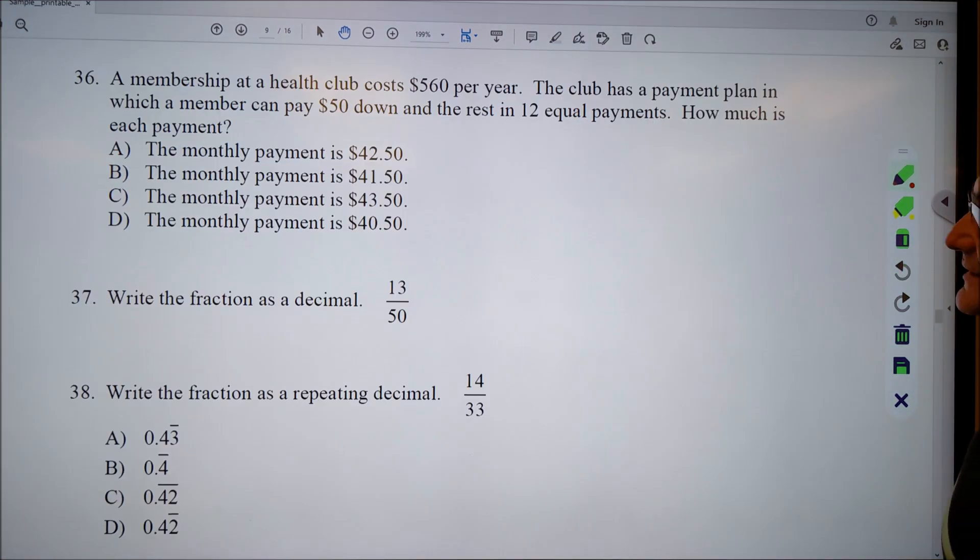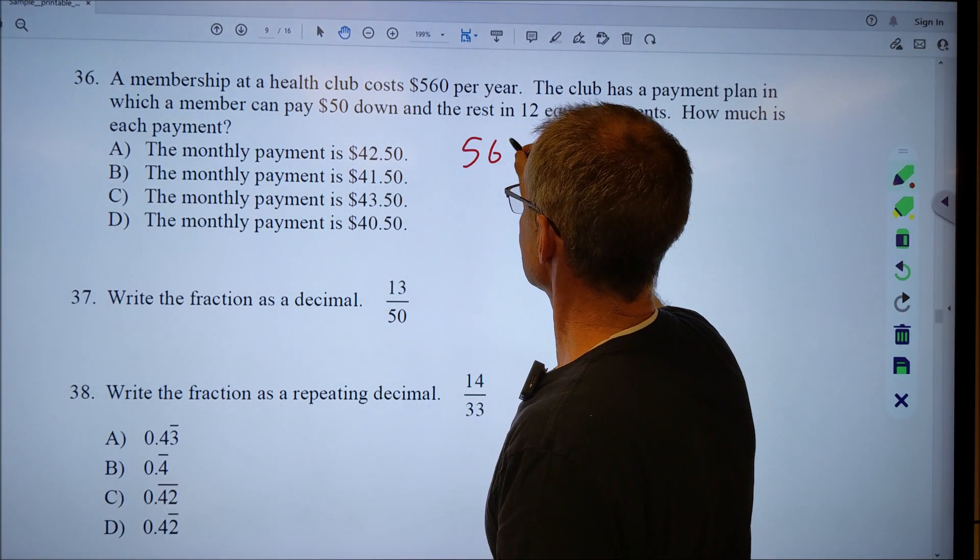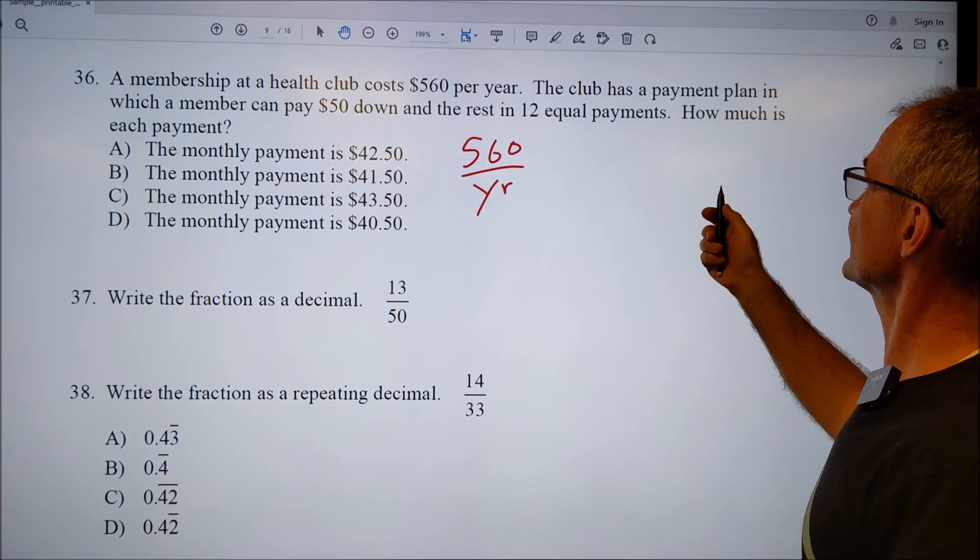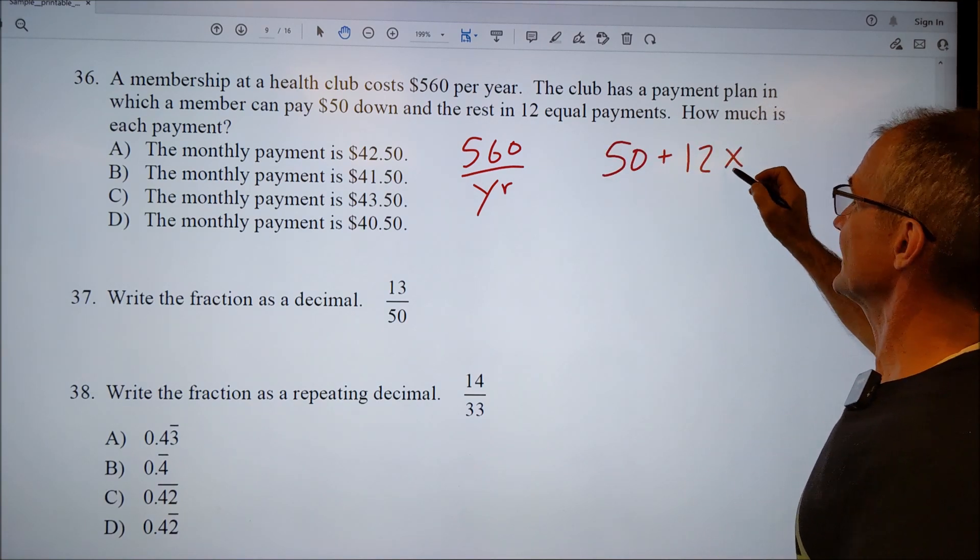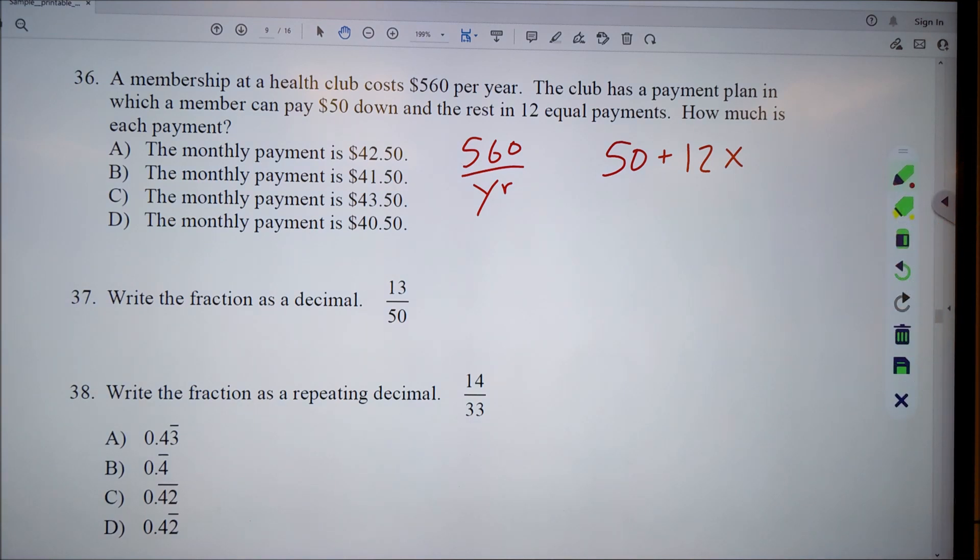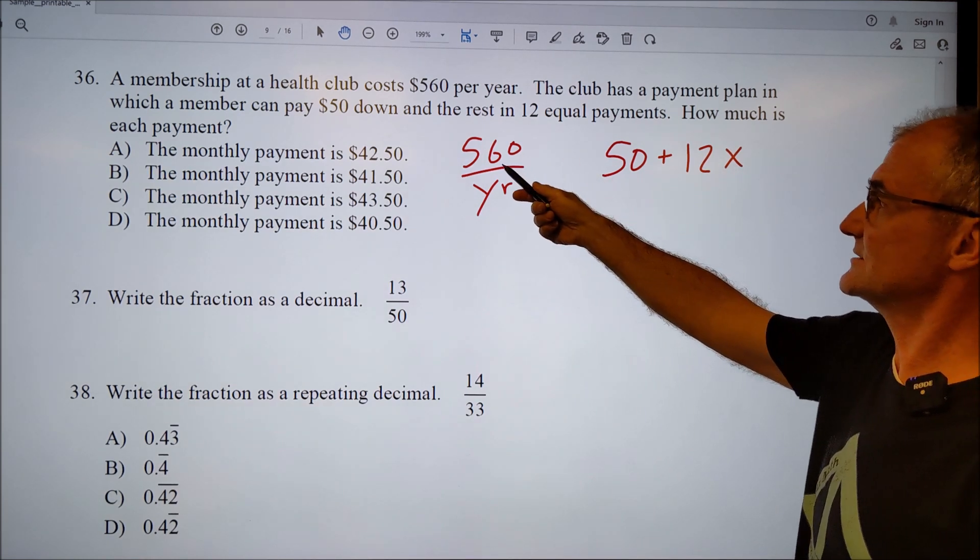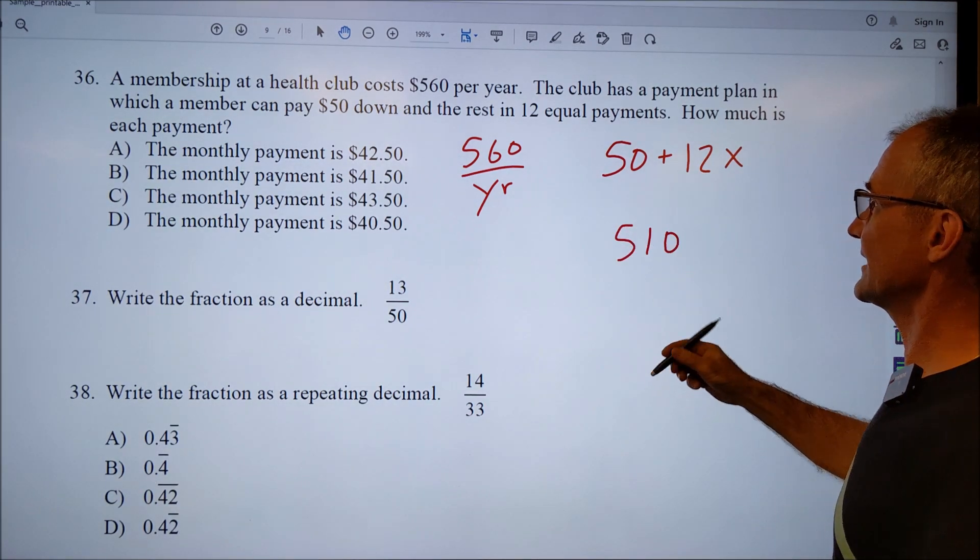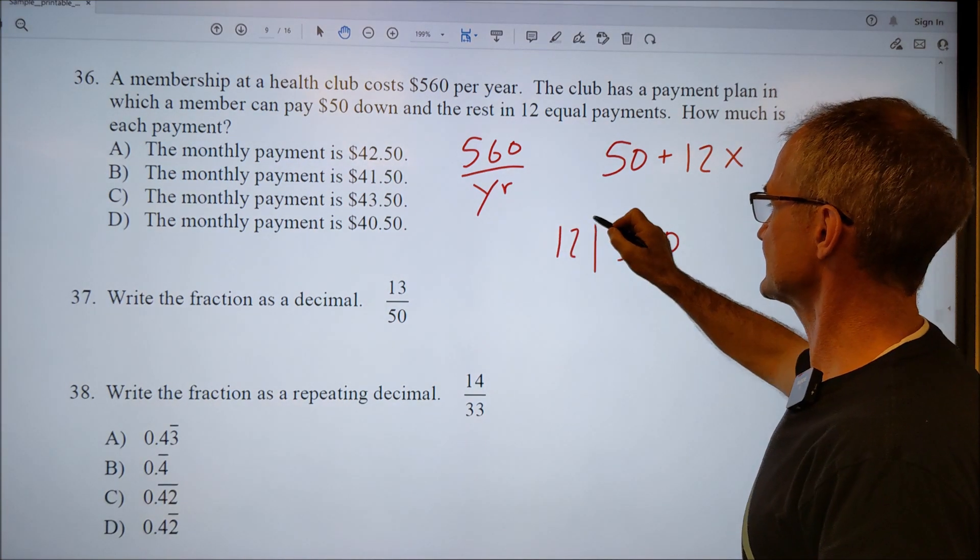Okay, number thirty-six. A member at a health club costs five hundred and sixty dollars per year. Kind of translating the paragraph to a couple numbers. A club has a payment plan in which a member can pay fifty dollars down plus twelve times a certain amount per payment. How much is each payment? So if there's no cost to it, I could do fifty plus twelve X equals five sixty. Or I could just do five sixty minus the fifty, five hundred and ten, right? After I put fifty dollars down, I got five hundred and ten more to pay. I got to make twelve payments of that.